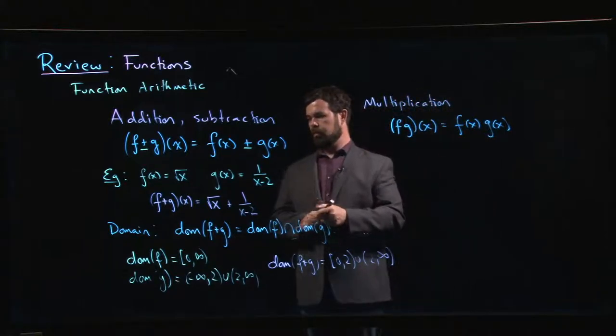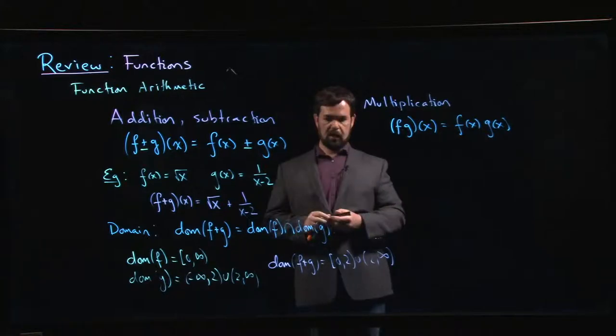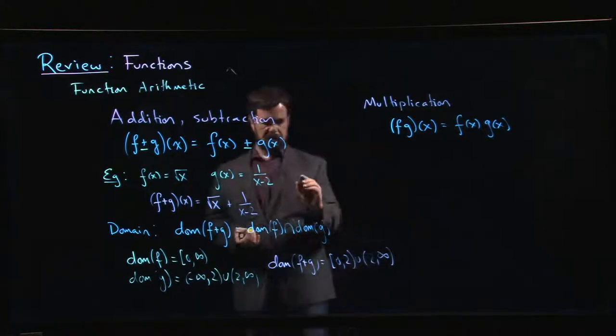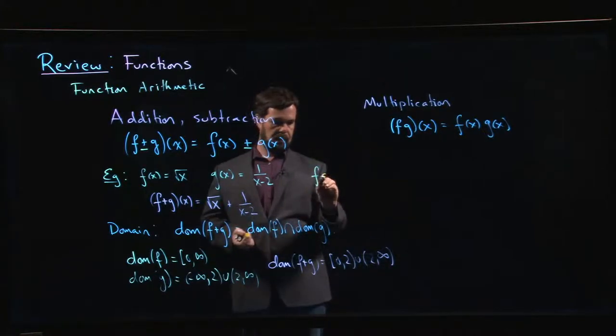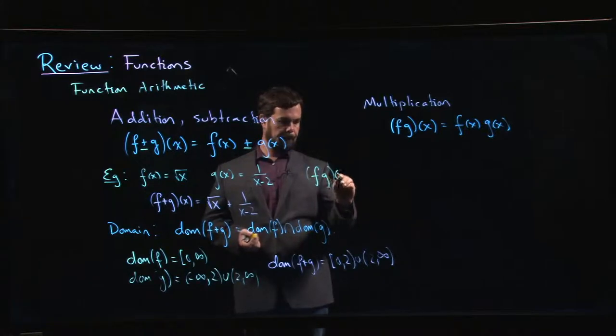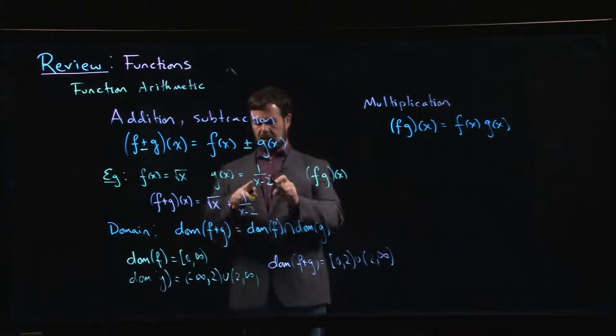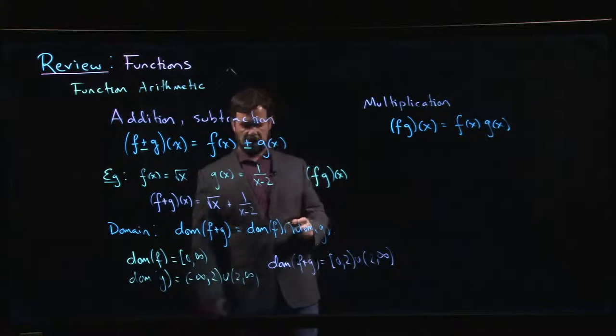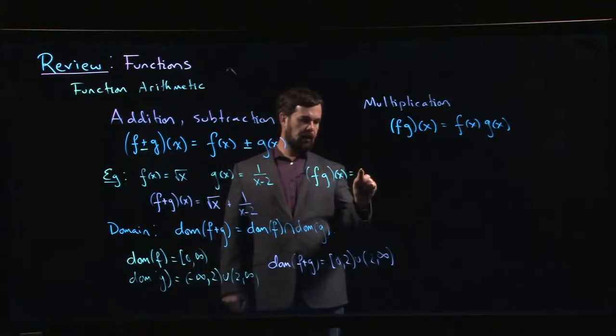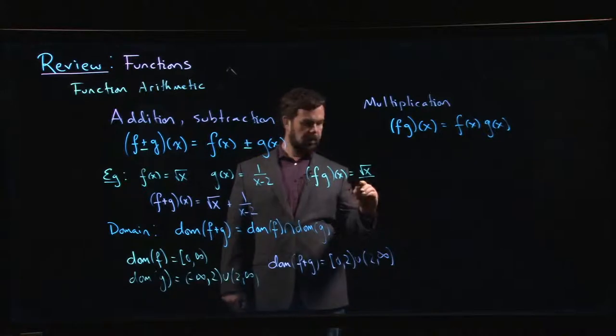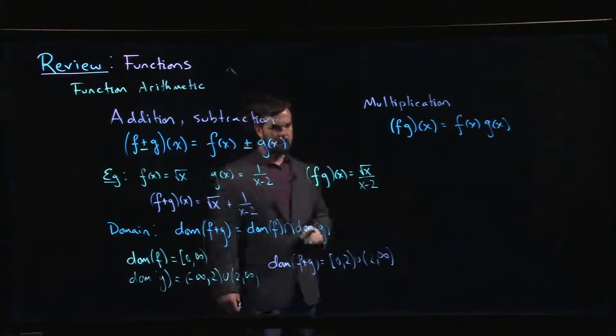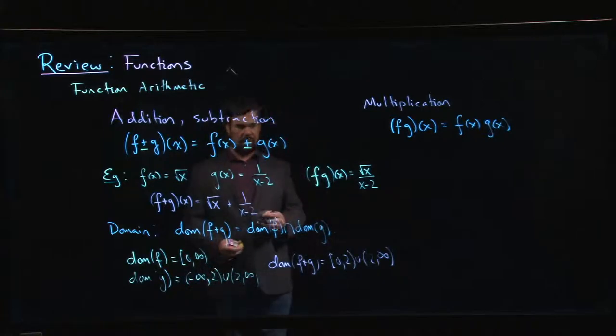So if we were going to do our example here, if I did f times g at x, I'm going to take this, I'm going to multiply by root x. Probably we'd combine that as a single fraction and write it like so. And you'll notice there's the same domain issue that you had before.